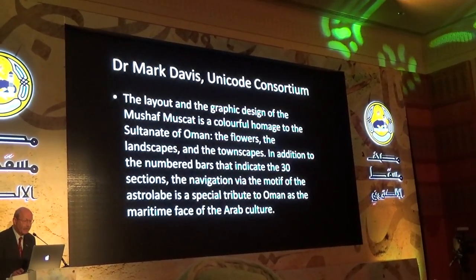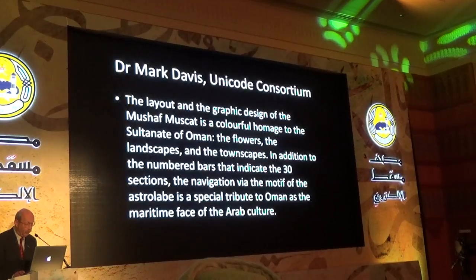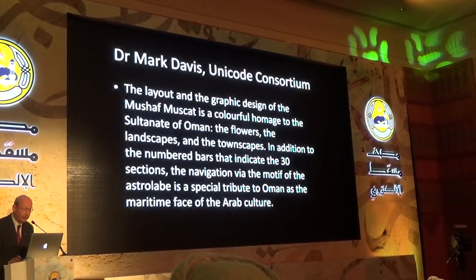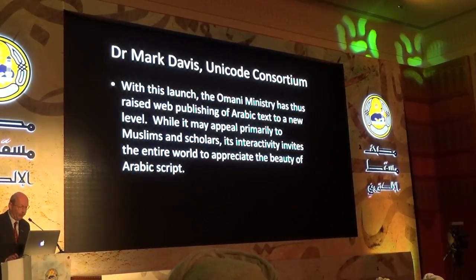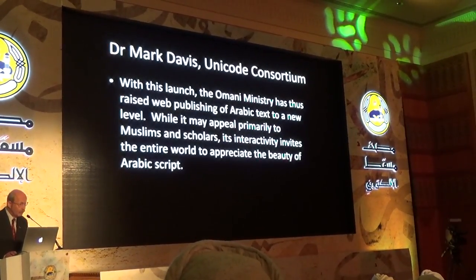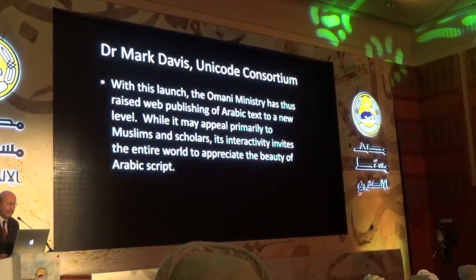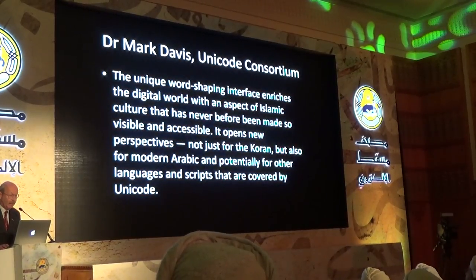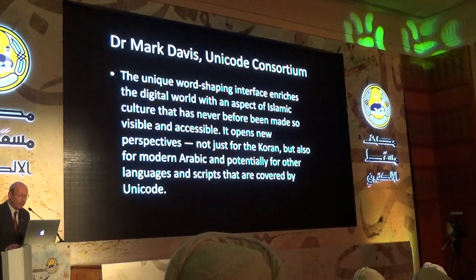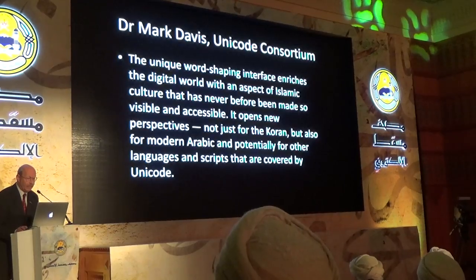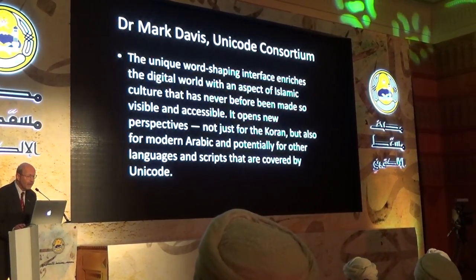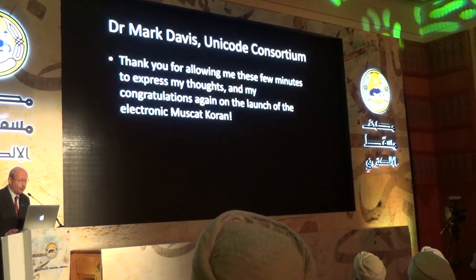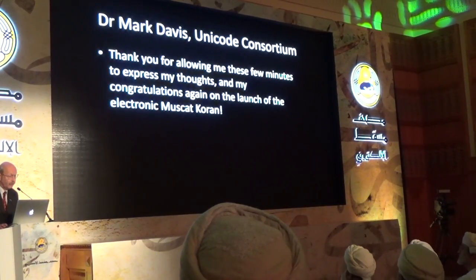'The layout and graphic design of the Moskhat Muscat is a colorful homage to the Sultanate of Oman — the flowers, the landscapes, the townscapes, in addition to the numbered bars indicating the 30 sections, and the navigation via the motif of the astrolabe, a special tribute to Oman as the maritime phase of Arab culture. With this launch, the Omani ministry has raised web publishing of Arabic text to a new level. Its interactivity invites the entire world to appreciate the beauty of Arabic script. The unique word-shaping interface enriches the digital world with an aspect of Islamic culture that has never before been made so visible and accessible — opening new perspectives not just for the Quran but also for modern Arabic and potentially for other languages and scripts covered by Unicode.'